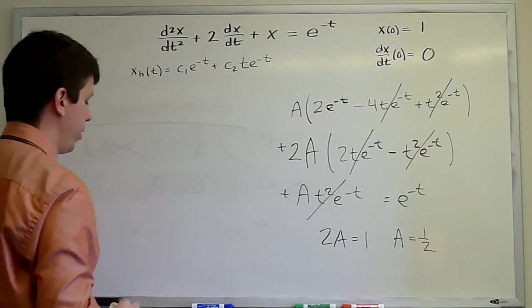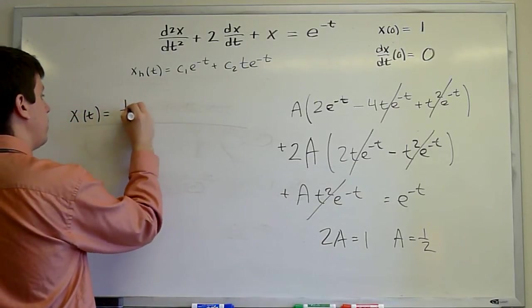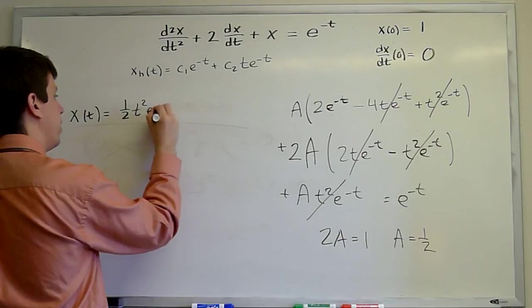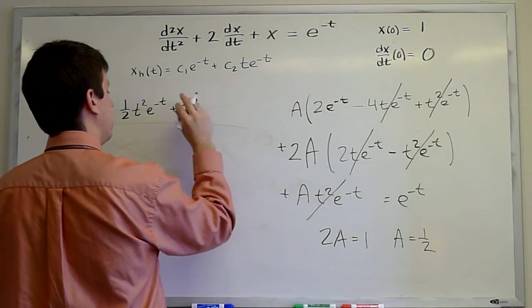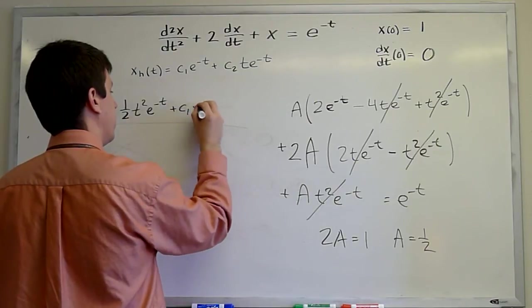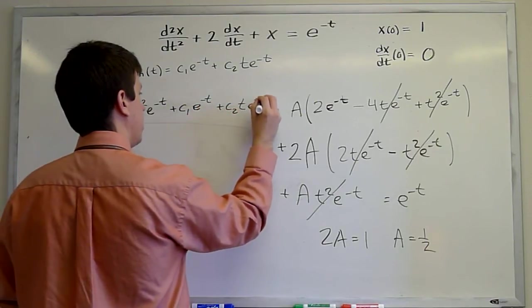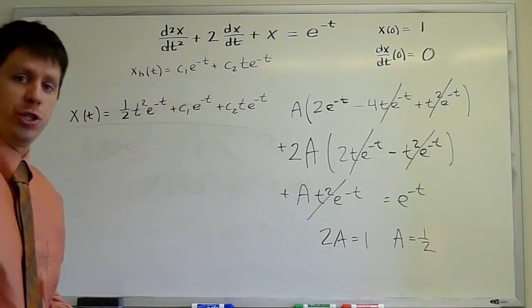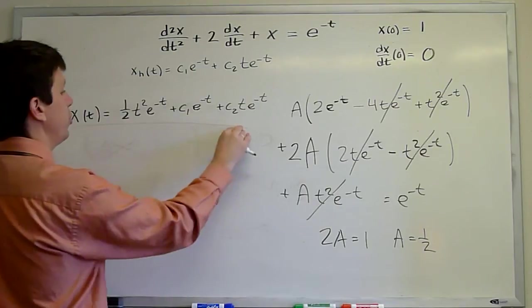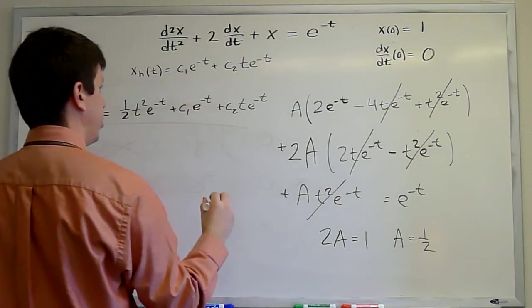One half t squared e to the minus t. So the general solution is one half t squared e to the minus t plus c1 e to the minus t plus c2 t e to the minus t. Now we need to satisfy the initial conditions. The last thing we do after we find the general solution, we satisfy the initial conditions.